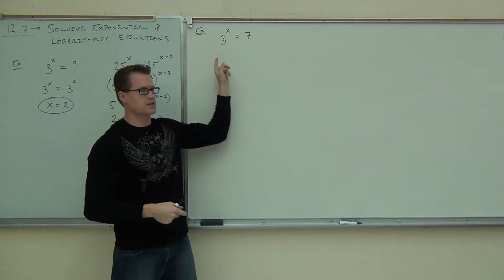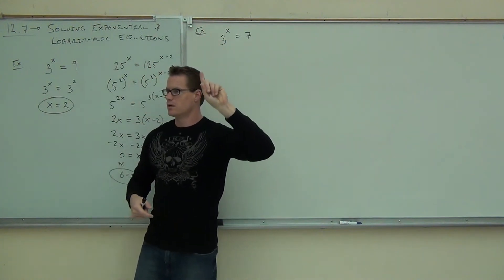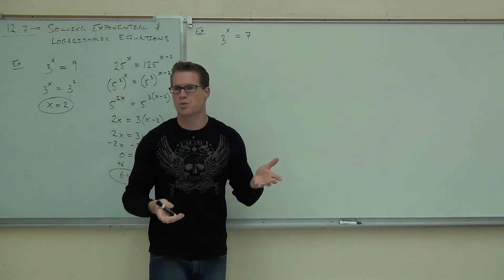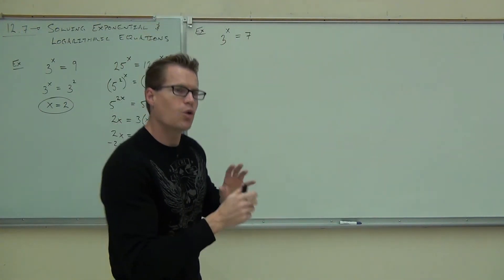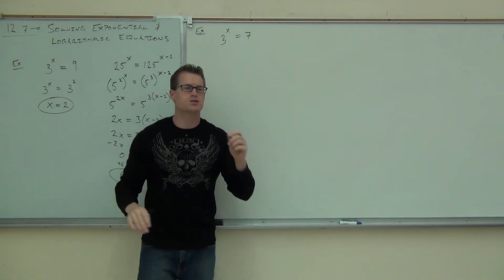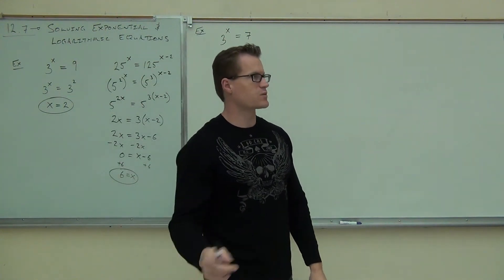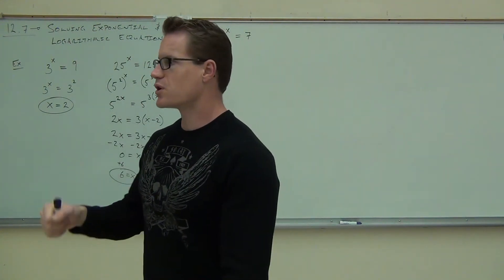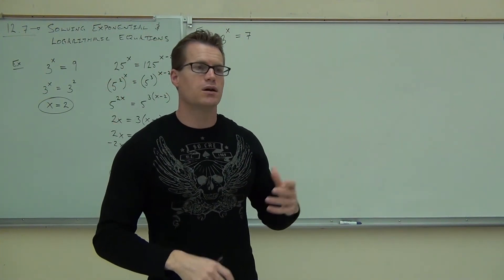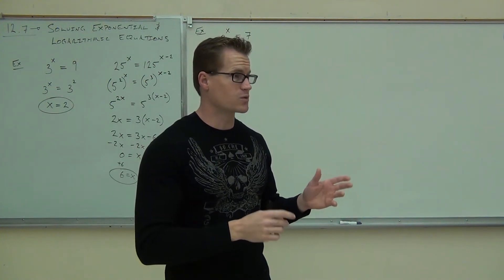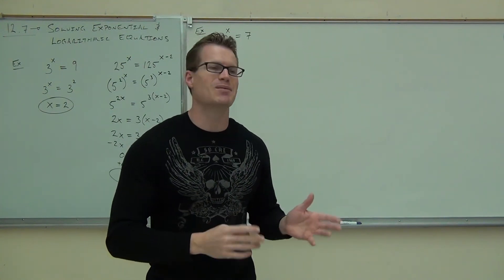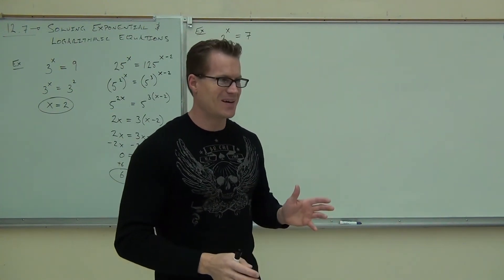Can you find a common base there? The question is, can you write either of these as the same number to a power? That's a no. This is 3. They're both prime numbers. There's not even any factors besides one that go into that, besides themselves. So there's no way to write these two things as a common base. So what are you going to do? Well, I just told you this about two minutes ago. In order to solve exponentials, besides the ones you can get a common base on, you need logarithms.